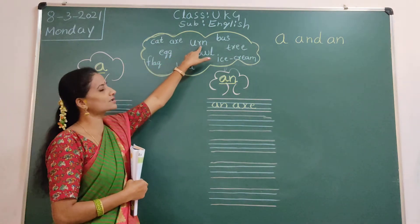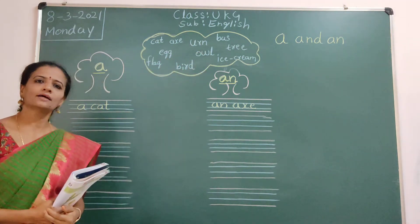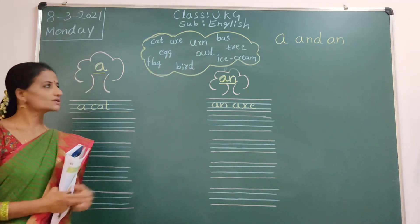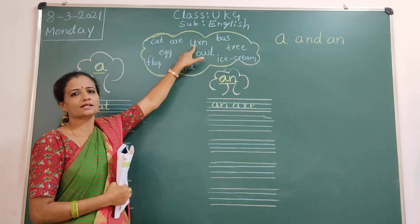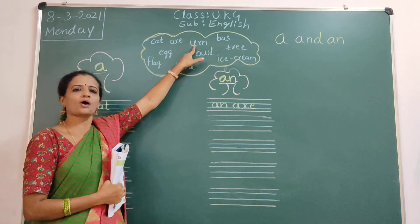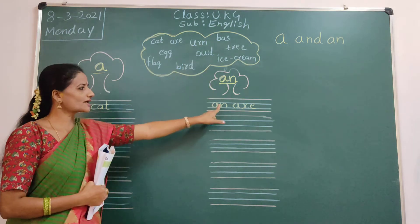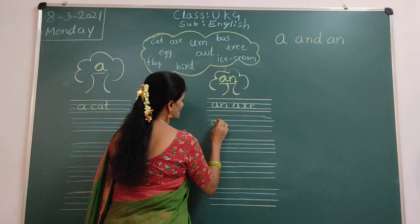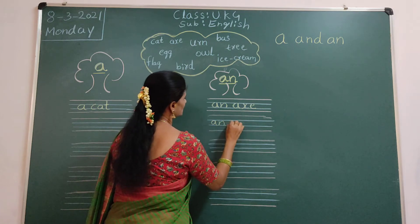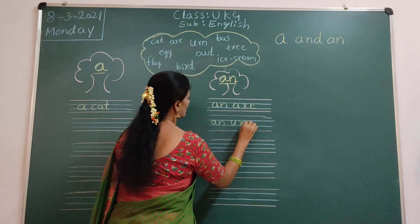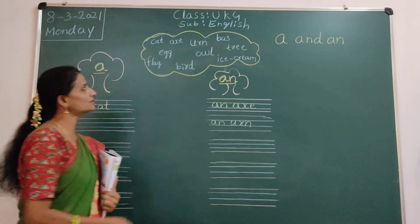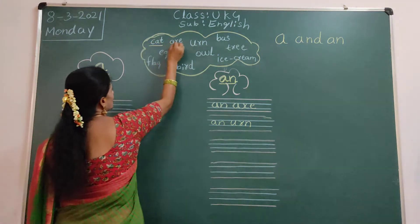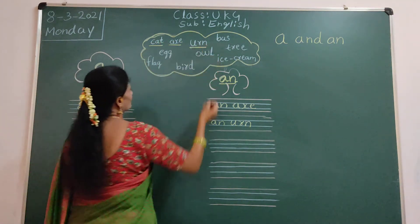Next, urn. U, R, and N. So, this is always vowel. Yes. U is a vowel. So, we will write it this side of the An. An. U, R, and N. And urn. So, this one finished. This one finished. This one finished.